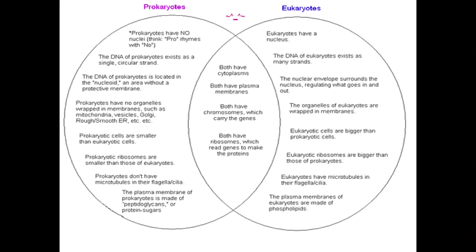The DNA of Prokaryotes is located in the nucleoid region, and in Eukaryotes the DNA is located in the nucleus. Prokaryotes have no organelles wrapped in membranes, so they don't have any mitochondria, vesicles, Golgi apparatus, or rough or smooth ER.